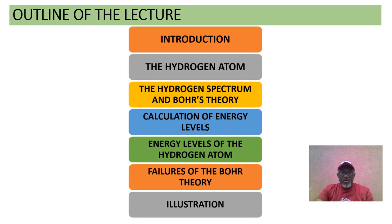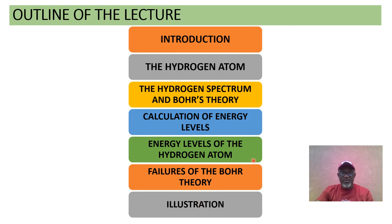We're going to look at the following — the outline of the lecture: introduction, the hydrogen atom, the hydrogen spectrum and Bohr's theory, calculation of energy levels and energy levels of the hydrogen atom, failures of Bohr's theory, some illustrations, and we conclude.